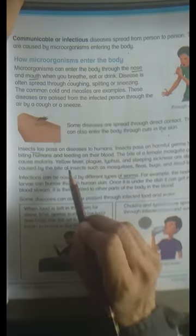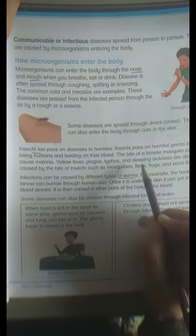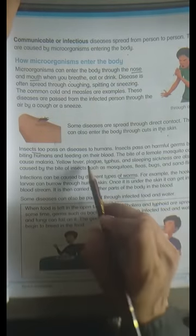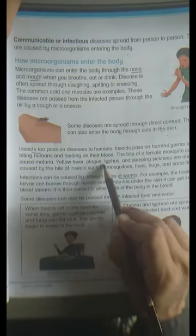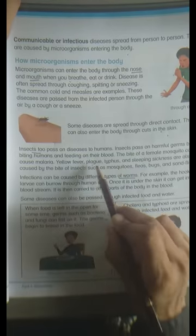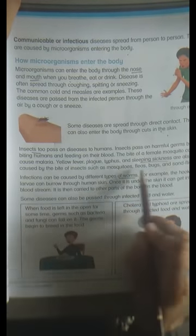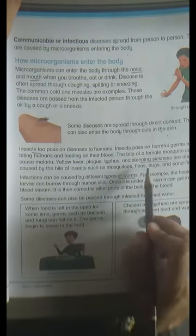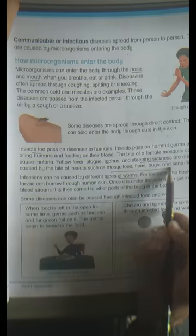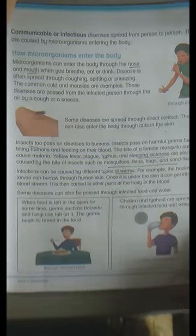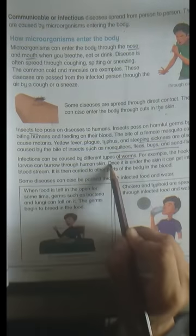Insects and worms can also cause diseases. The female mosquito causes malaria. Other insects cause diseases like plague, typhus, and sleeping sickness. These are caused by insects such as mosquitoes, fleas, bugs, and sand flies.